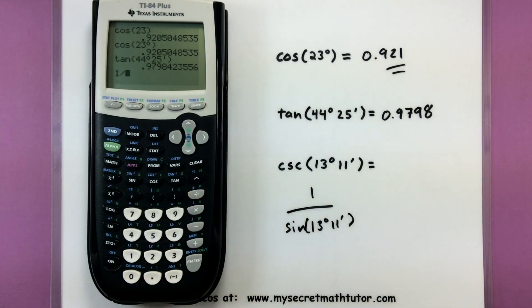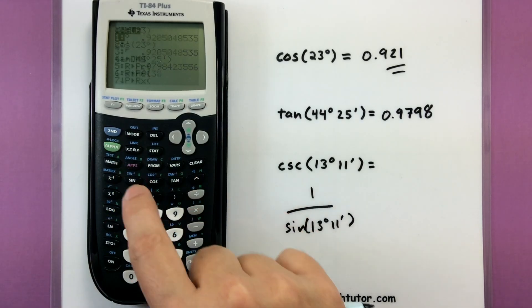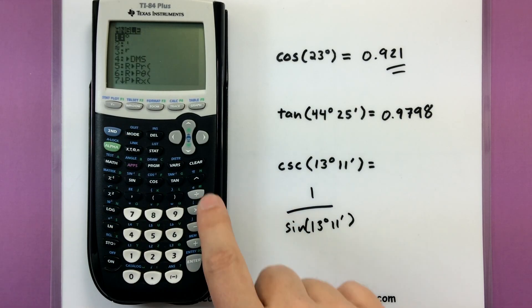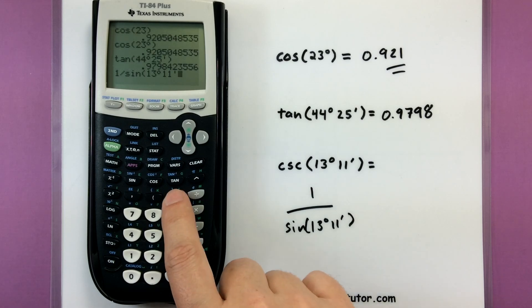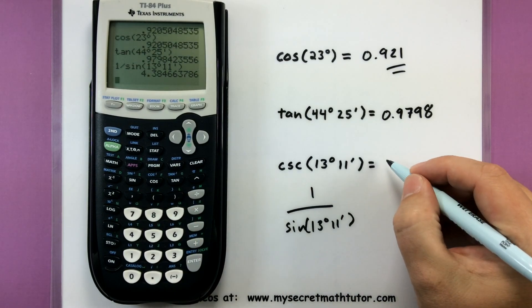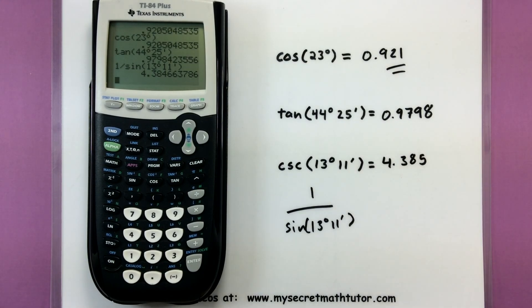So 1 divided by sine. And now let's do our 13, second angle degrees, 11, second angle minutes. Close our parentheses and press enter. And now there's my value for cosecant: 4.385, rounded to three decimal places.